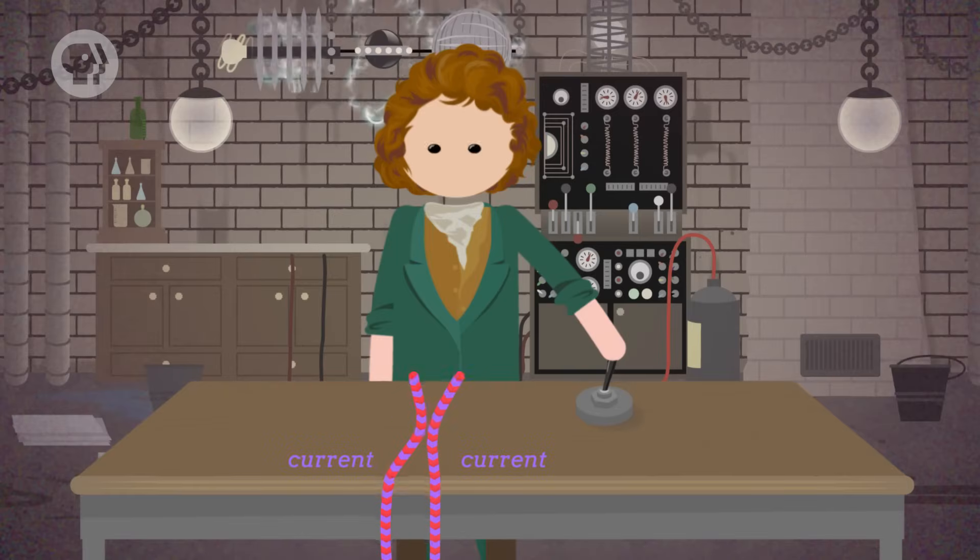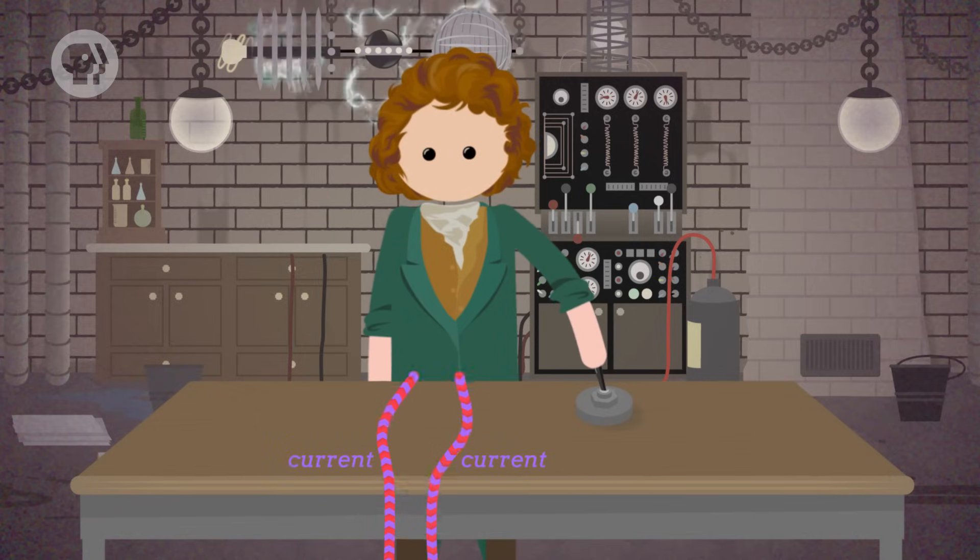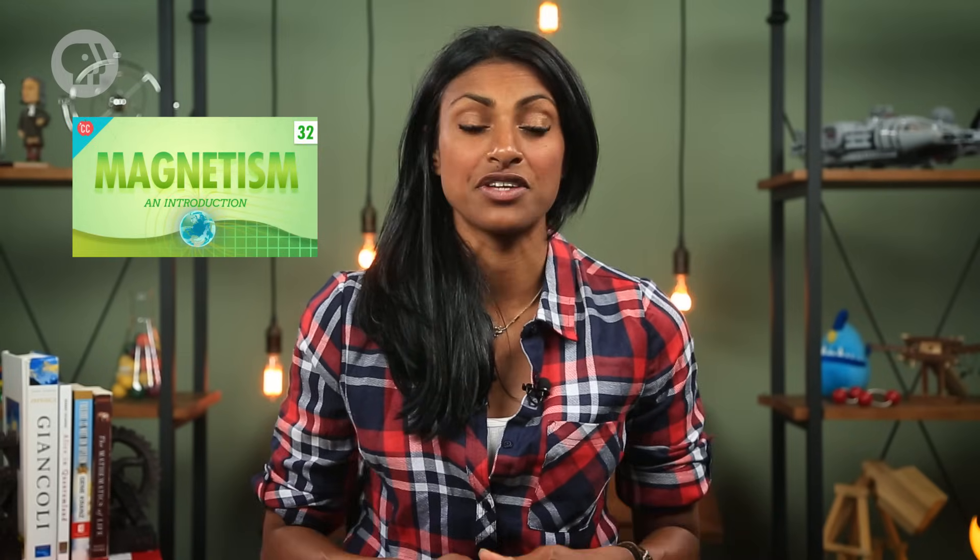So first, those two parallel wires – why do they attract and repel each other? It's easier to see why the two wires act the way they do if you look at one wire first. Like we talked about in our last episode, the current running through a wire generates a magnetic field.